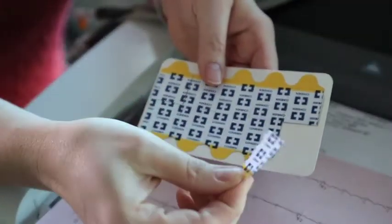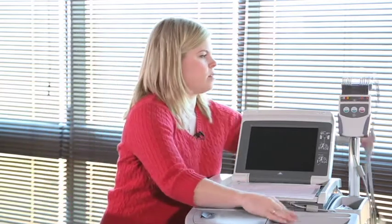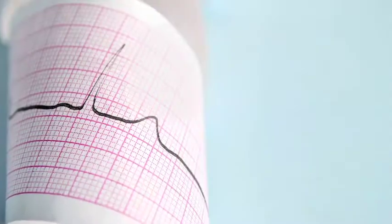They stick 12 of these little electrodes on the patient's chest and around, which then hook onto these wires, and then we're able to print out the tracing.